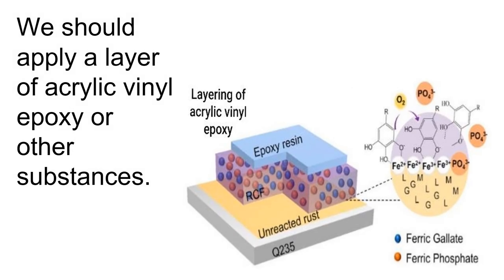Now I am going to explain my fourth slide, which is another way by which we can protect iron from rust. The way is that we should apply a layer of acrylic, vinyl, epoxy, or other substances on iron.